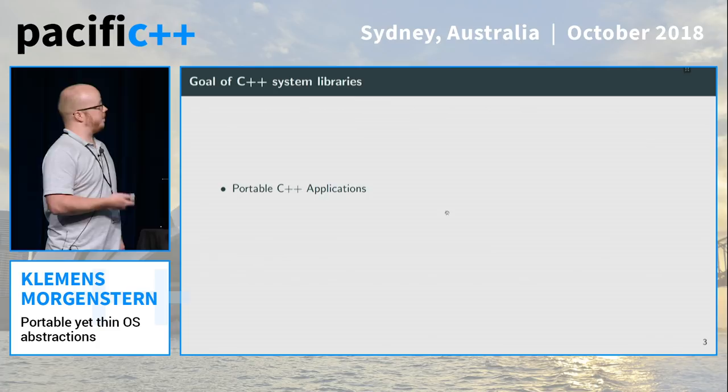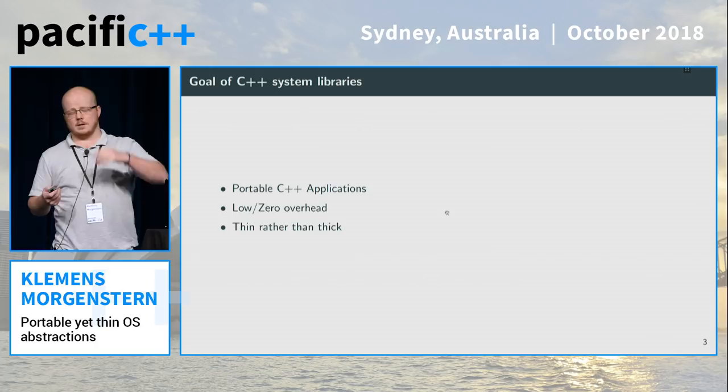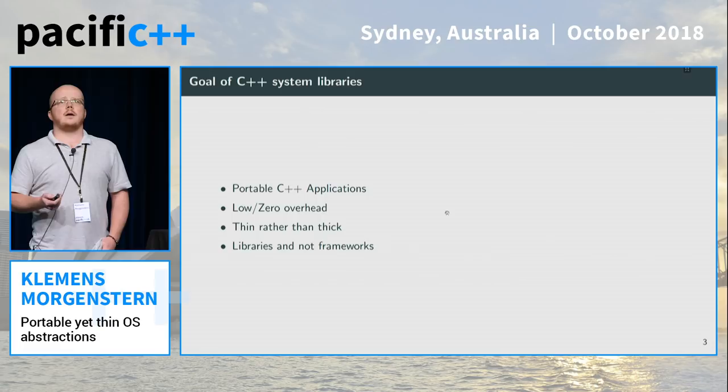So why do we want system libraries? Well, we want to write portable C++ applications. We want low or zero overhead, since we're in C++. We want thin concepts rather than thick — I'll explain that in a minute. And it should be libraries, not frameworks. There are good C++ frameworks, but those never make it into the standard.